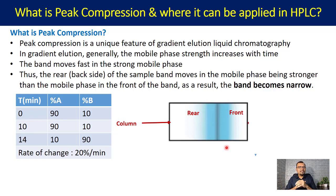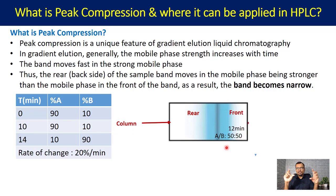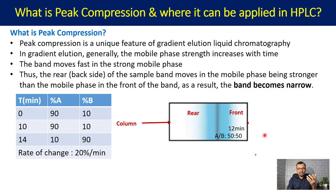Let us take a snapshot inside the column at exactly 12 minutes. What is the proportion of A and B at 12 minutes? If you calculate, you will find that 50% A and 50% B are available in the mobile phase at 12 minutes. If we then take a snapshot at 13 minutes, by the rate of change of 20% per minute, A will be 30% and B will be 70%.